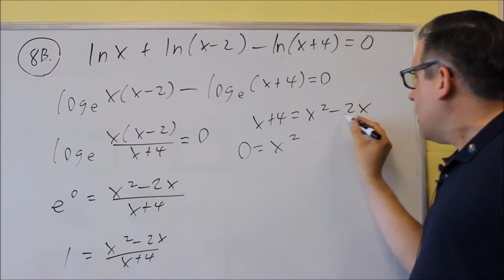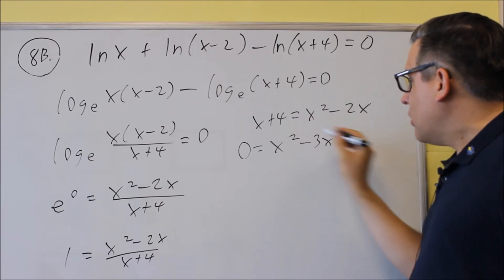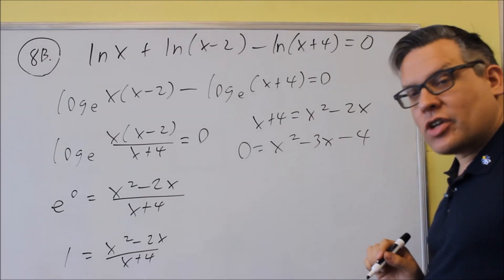So when that happens, negative 2x minus x, that's negative 3x. The 4 also becomes negative when we take that over to the other side.